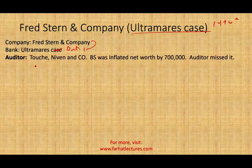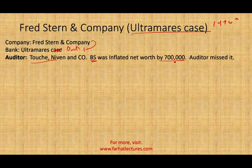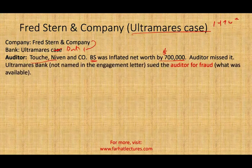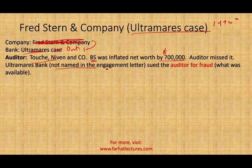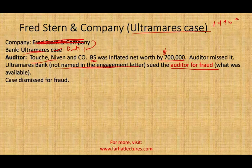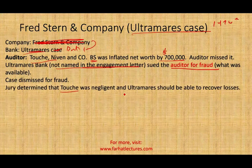Fred Stern and Company hired Touche Niven to audit their balance sheet. The auditors missed something and the balance sheet was inflated by $700,000. Fred Stern took the audited financials to Ultramaris Bank, got a loan, and later went out of business. Ultramaris Bank tried to recover their money by going after the auditor. Since Ultramaris was not named in the engagement letter, their only option at that point was to sue for fraud.